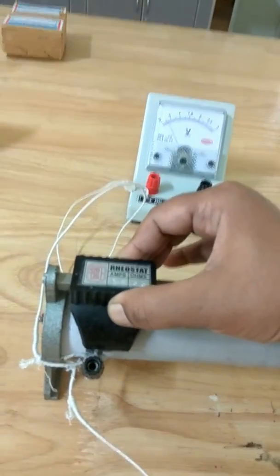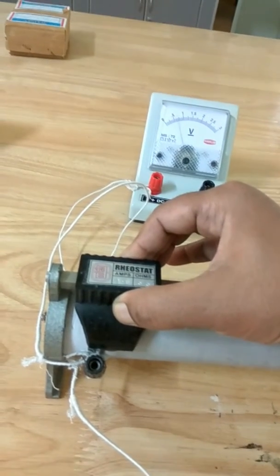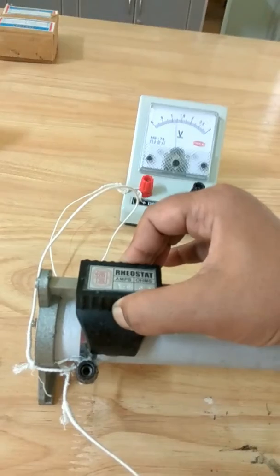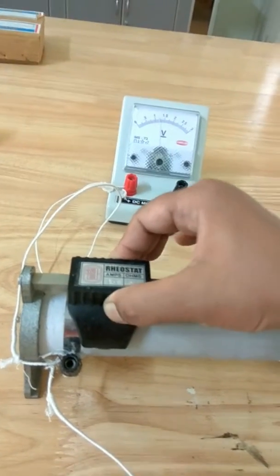You can see that the needle in the voltmeter is moving and it is going up. Since I have set it for 2 volts, it will go till 2.